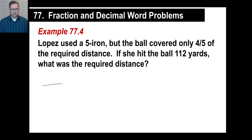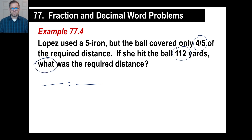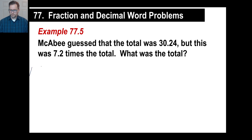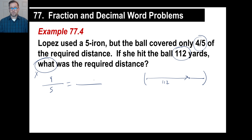If you don't like that method, use fraction equals fraction. You have four-fifths on one side, and 112 over x on the other. The required distance is more than 112, so the bigger number x is on the bottom — 112 over x. Cross multiply: 4 times x equals 5 times 112, which is 560. Divide by 4, and you get the same answer: 140.